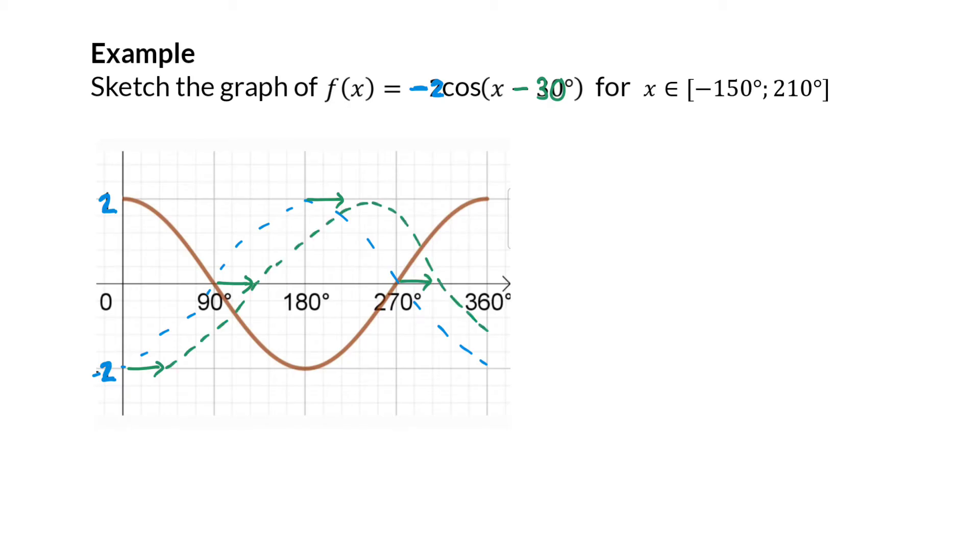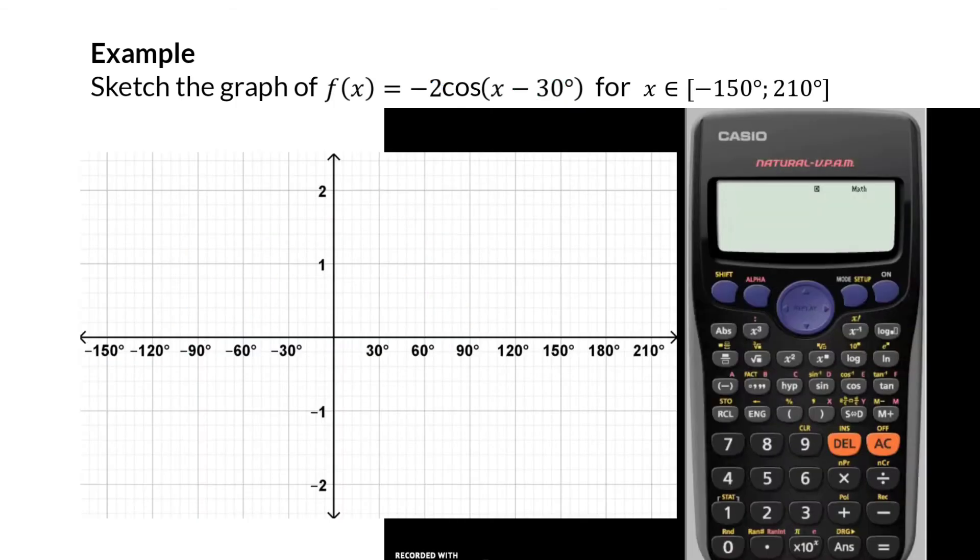Now that we have an idea of what the graph will look like, we can use the calculator to determine all the coordinates, plot those points, and then connect to draw the graph. On your calculator, you start by changing the mode to table mode option 3, and then you read in your equation: -2cos, and then the calculator automatically adds a bracket. We need to add our x - 30 and then close the bracket.